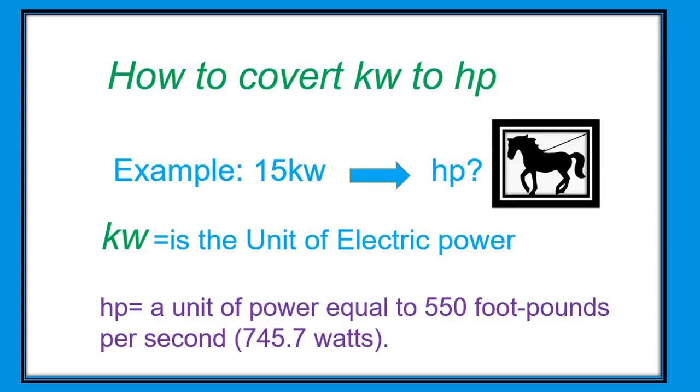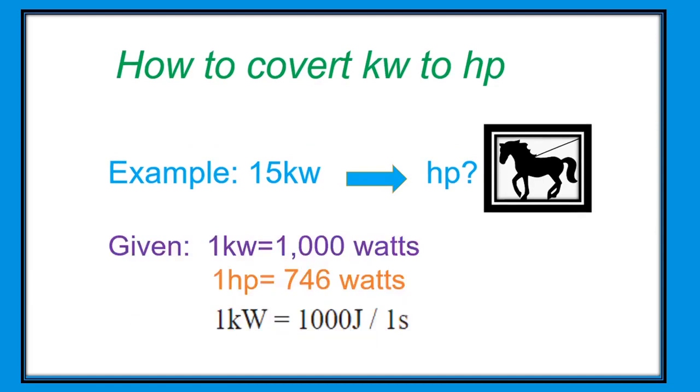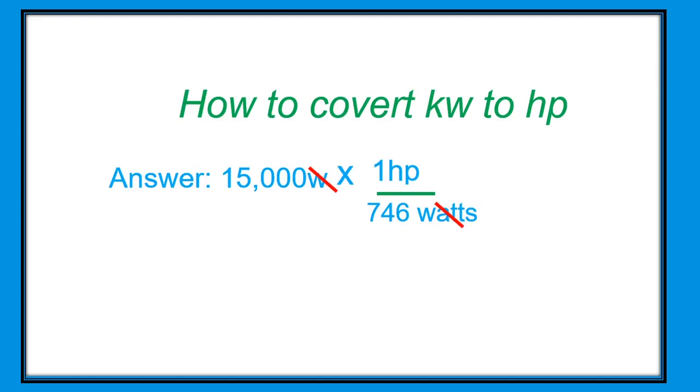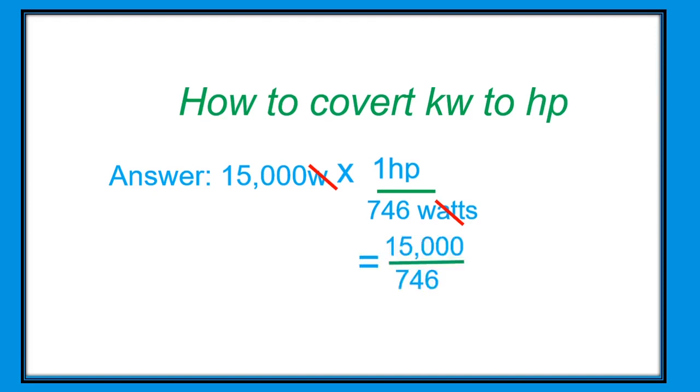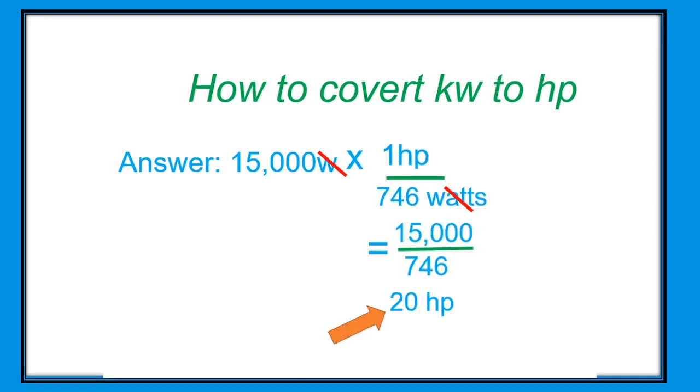Next, how to convert kilowatt to horsepower. Our example here is 15 kilowatts. Kilowatt is the unit of electric power, and horsepower is a unit of power equal to 550 foot-pounds per second or 745.7 watts. Given: one horsepower equals 746 watts. One kilowatt equals one thousand joules per second. Answer: 15,000 watts times one horsepower over 746 watts. We are going to cancel the watts, so it should be 15,000 divided by 746, which equals 20 horsepower.